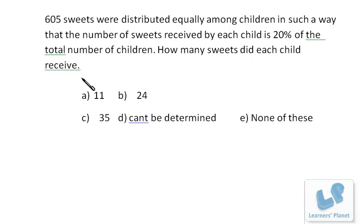Now, you don't have to go for any sort of paperwork in this sort of problem. 605 sweets are there and the sweets are being distributed equally among the children. That means the number of children should be a factor of 605, right?